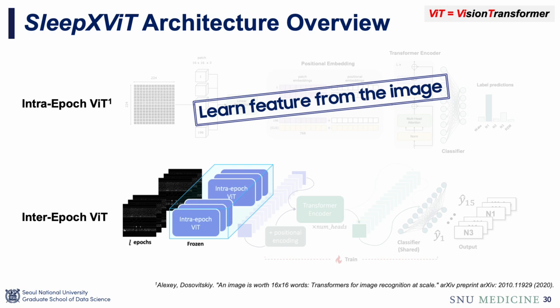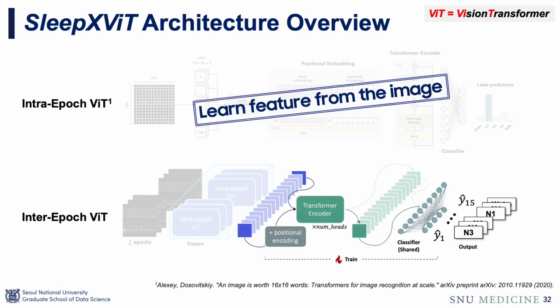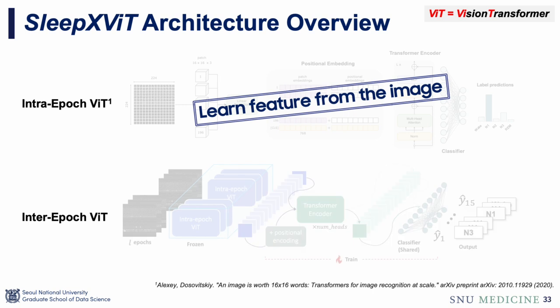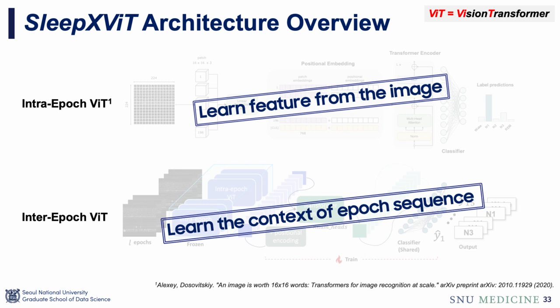Next, in the inter-epoch VIT, we concatenate consecutive epochs into a new sequence and feed this sequence into a transformer encoder, training the network to produce a sequence as output. This approach allows our model to learn the context of each sequence, thereby improving its accuracy.